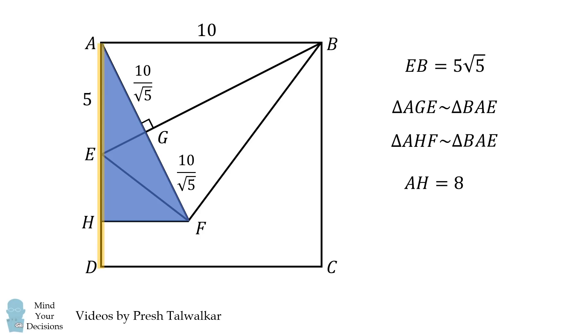Now, AD, the entire side of the square, is equal to 10. AH plus HD must be equal to 10, and this means HD is equal to 2. But HD is exactly equal to the distance from F to the line segment DC. Therefore, the distance from F to the line segment DC is equal to 2, and that's our answer.